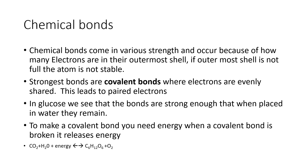Chemical bonds have various strengths and occur because of how electrons are on the outer shell. If the outer electron shell is not full of electrons, it is not stable. The strongest type of bonds happen when electrons are evenly shared and you can't tear them apart under normal conditions.